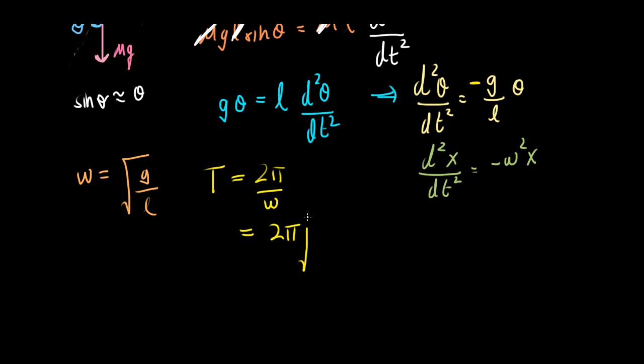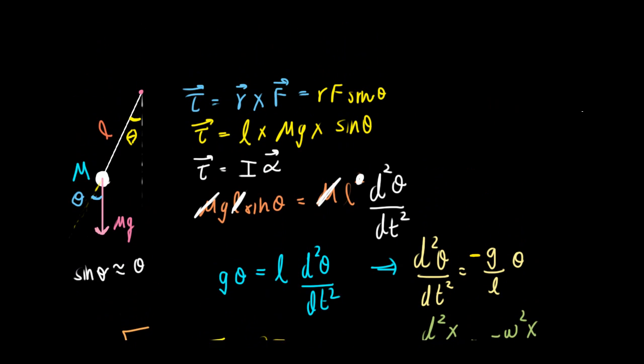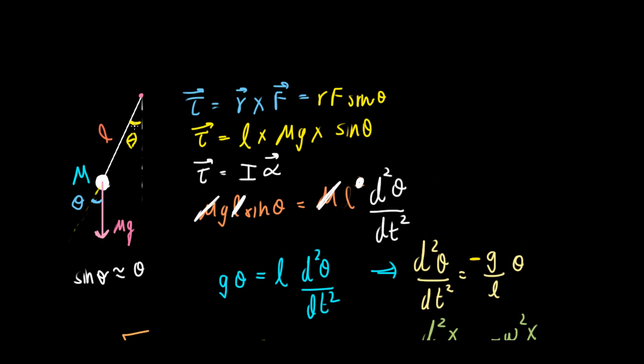There we go. We have just shown that the time period of a simple pendulum is given by this, as long as the string is massless and this angular displacement is very small.